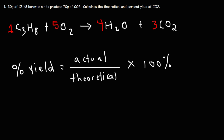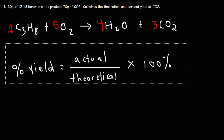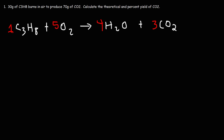When working with stoichiometric problems, we identify the limiting and excess reactants. Propane is the limiting reactant and O2 is the excess reactant. We weren't given the grams of O2 because propane simply burns in air, and we assume a relatively unlimited supply of O2 in the atmosphere. We start with the 30 grams of propane and convert it to moles using the molar mass.